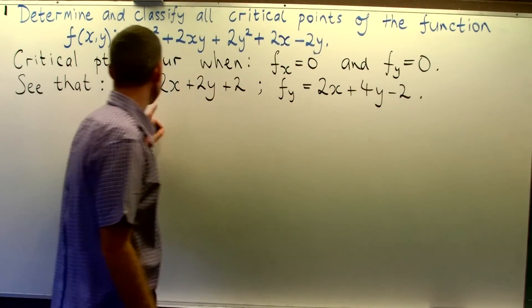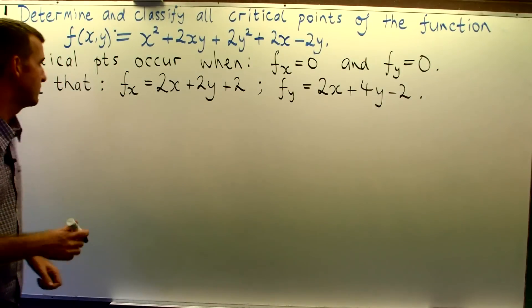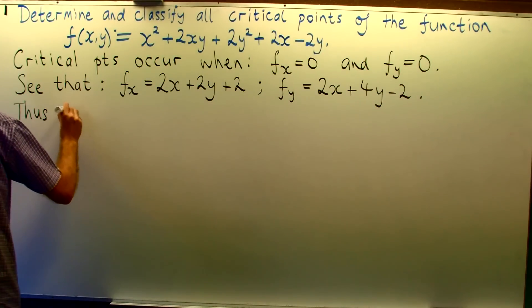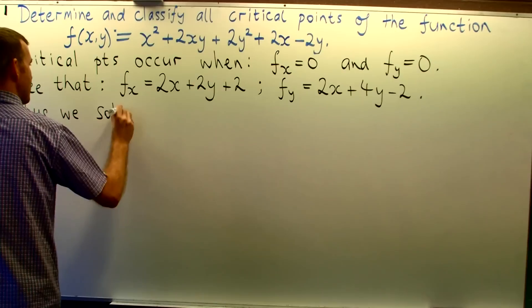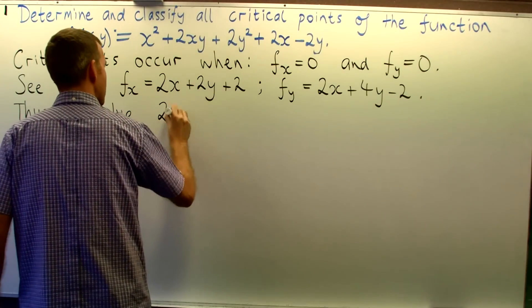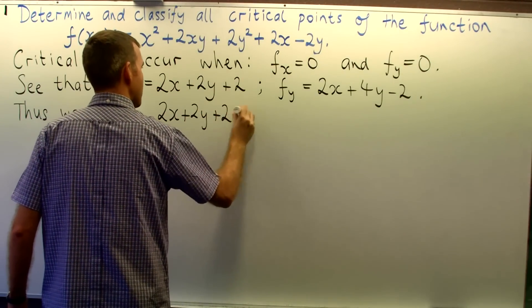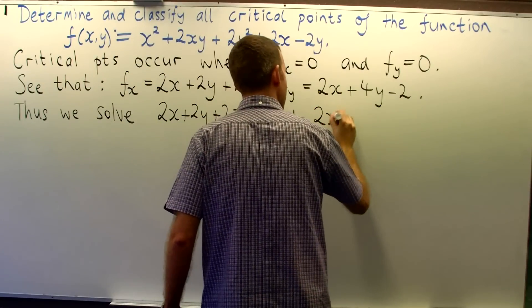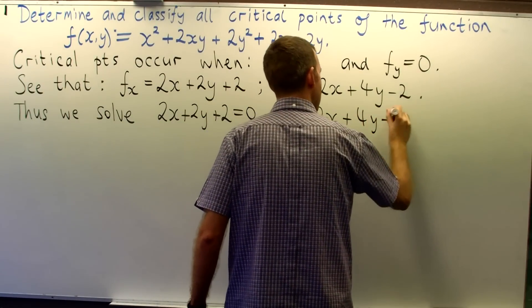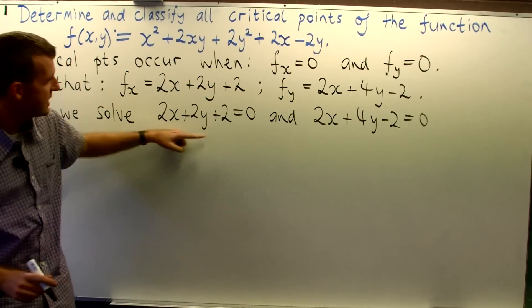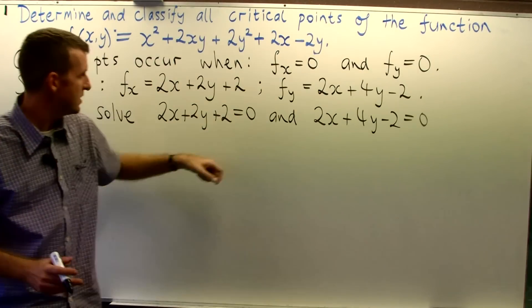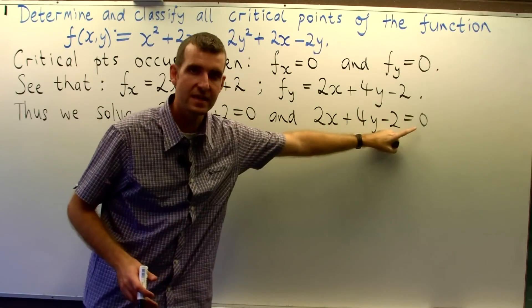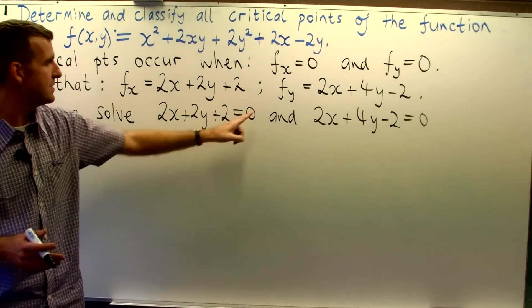So in this second case we are going to get 2x plus 4y minus 2. Okay, so we set both of these expressions equal to zero and solve. Okay, so if you look at these two equations here and here, well they are not too difficult.